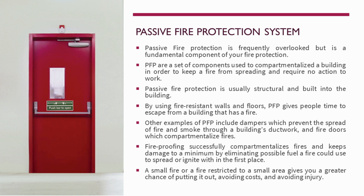Other examples of passive fire protection include dampers, which prevent the spread of fire and smoke through a building's ductwork, and fire doors, which compartmentalize fires. Fire proofing successfully compartmentalizes fires and keeps damage to a minimum by eliminating possible fuel a fire could use to spread. A small fire restricted to a small area gives you a greater chance of putting it out, avoiding cost and injury.